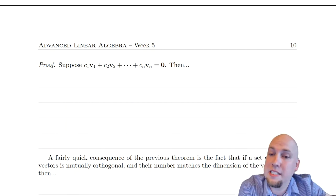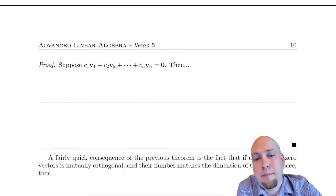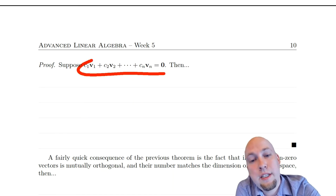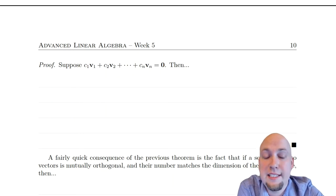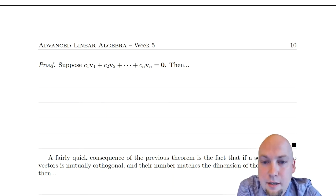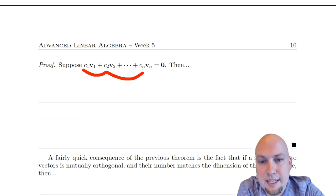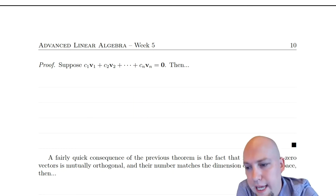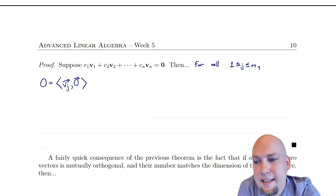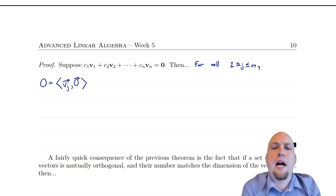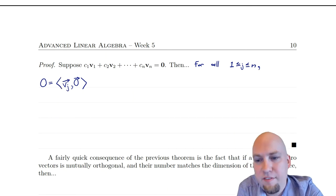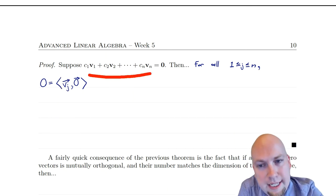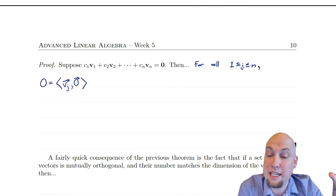The setup: we want to show that the set is linearly independent. The way you do that is you show that the only solution to this linear system is the all-zero solution — in other words, that this linear combination equaling zero implies all of the c's have to equal zero. We're going to take this linear combination and take the inner product of it with the vector v_j, the j-th vector from the basis. We do that on both the left-hand side and the right-hand side, and we must get the same thing.